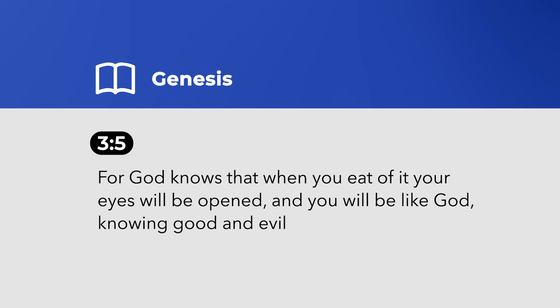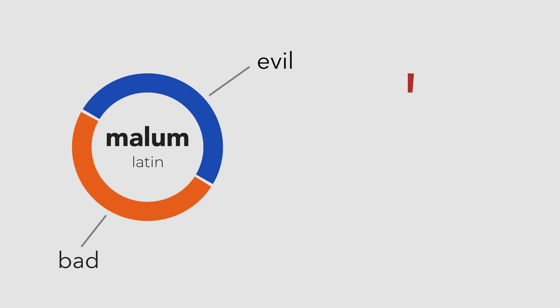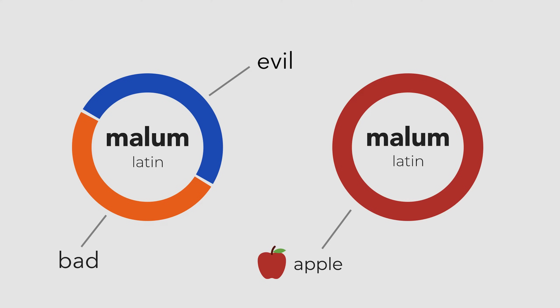When Genesis 3:5 describes the tree of the knowledge of good and evil, the word evil is translated as malum. Malum is also a separate Latin word which means apple. So it has been suggested that the similarity between the words caused Christian writers to connect them. As popular as this answer is, it's wrong. There is simply no evidence in Latin commentaries of anyone picking up on this accidental wordplay.